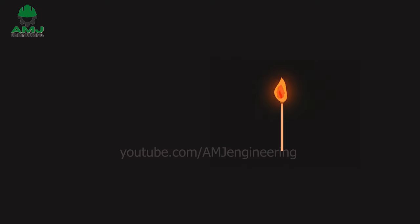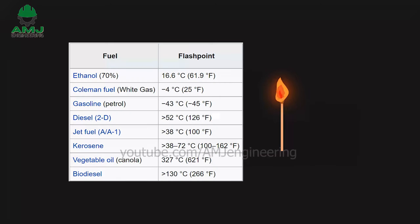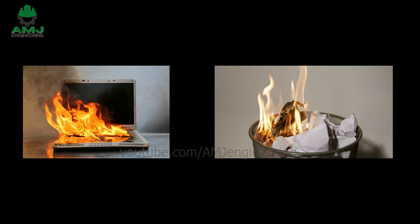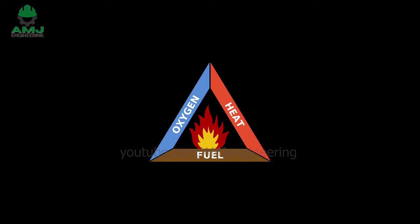First, a source of heat is required for ignition to occur, and different materials have different flash points. Flash point is the lowest temperature at which the material ignites. Second, a fire cannot begin if there is no material to burn. Homes and businesses are full of flammable materials such as paper, oil, wood, and fabrics. Any of these can serve as fuel for a fire.